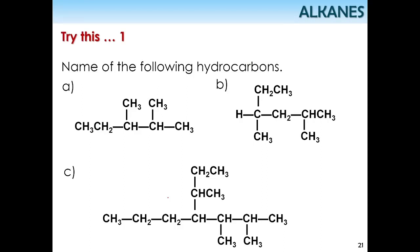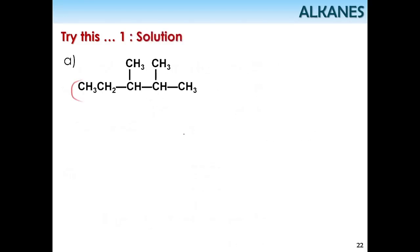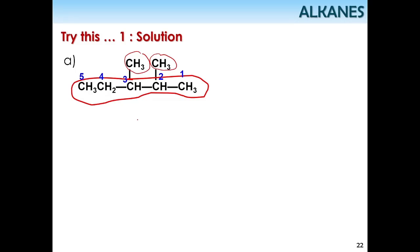Let's try to name the following compounds — you can pause the video to do the exercise, then come back to see the answer. For the first example: find the longest chain, which gives seven carbons — heptane. Labelling carbons 1 through 7, you find methyl groups at positions 2 and 3, giving 2,3-dimethylheptane. Counting from the other end would give 3,4-dimethylheptane, which is wrong because we must choose the numbering with the lowest locant sum.